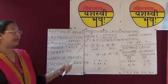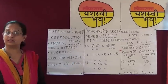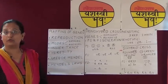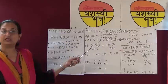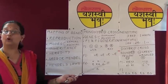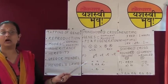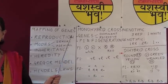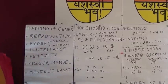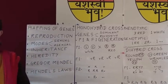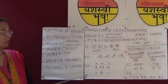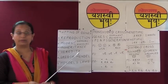Genes are the hereditary characters that get transmitted from parents to offspring. There are two types of genes — dominant and recessive. The dominant genes are the ones which mask the recessive ones, whereas the recessive genes are those that are hidden or do not appear.